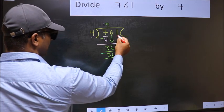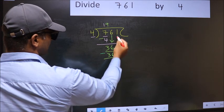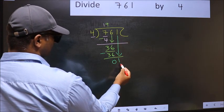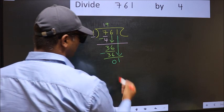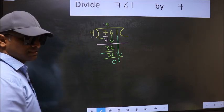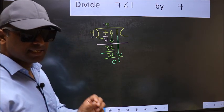After this, bring down the beside number. So 1 down. After this step, the mistake happens. And the mistake is this.